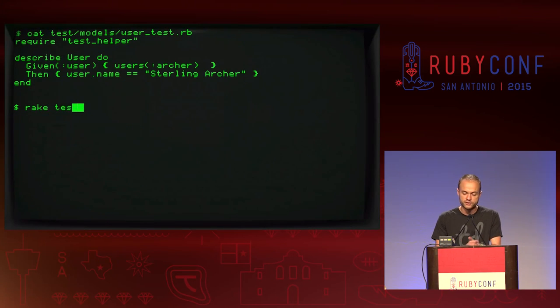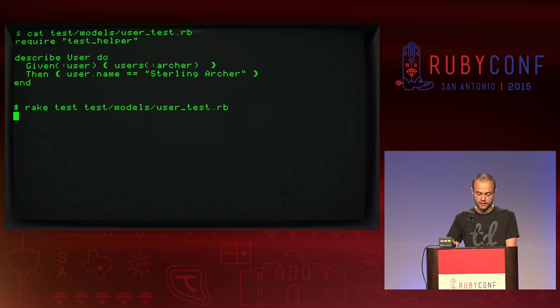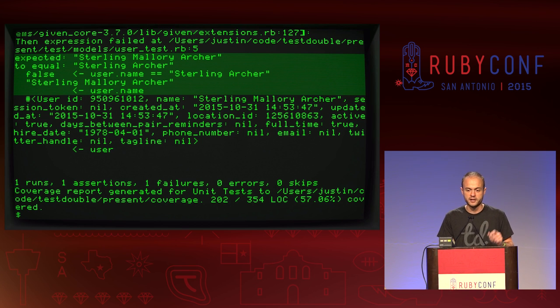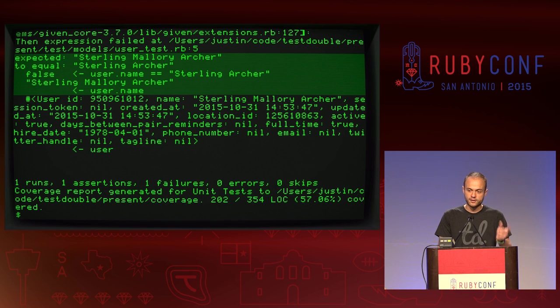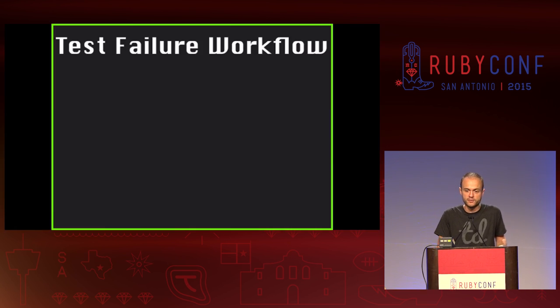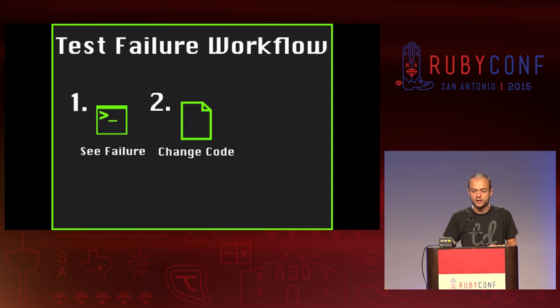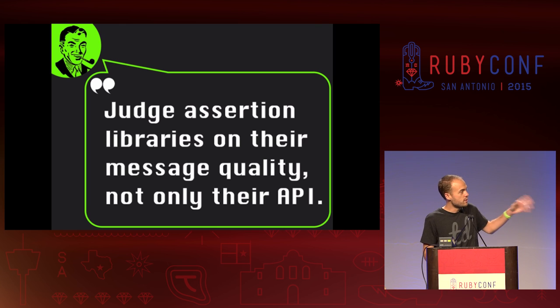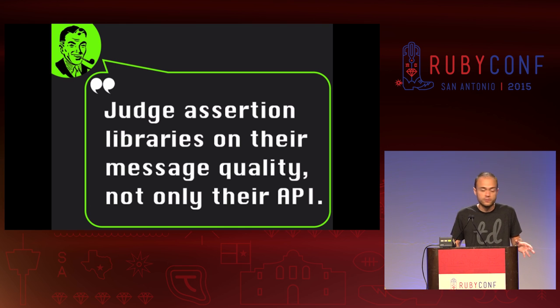Now let's look at a good error message. In an RSpec Given example, we say 'then username == sterling archer,' run that test, and the output is: 'Expected sterling mallory archer to equal sterling archer.' You can see the assertion right there. What it does is keep calling until it can't call anymore — user.name evaluated to sterling mallory archer, but it also knew it could call user and prints that whole active record object. Most of the time, when I see a failure in RSpec Given, I see the failure, realize what I did wrong, change the code, and earn a big juicy promotion because I'm so much faster. Judge assertion libraries on their message quality, not just how cool and snazzy their API is.